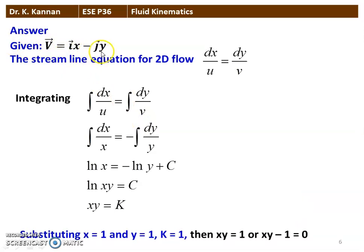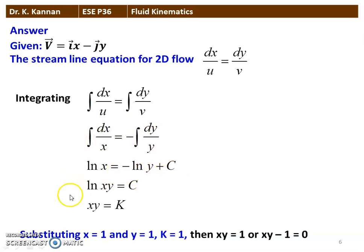The velocity vector V = iX - jY. The stream line equation for two-dimensional flow is dx/U = dy/V. Integrating: from the velocity vector, U = X and V = -Y. So it becomes dx/X = -dy/Y. Integrating: ln(X) = -ln(Y) + C, rearranging gives ln(XY) = C, or XY = K (a constant). At X = 1, Y = 1, substituting gives K = 1. Then XY = 1, or XY - 1 = 0. That is the answer.